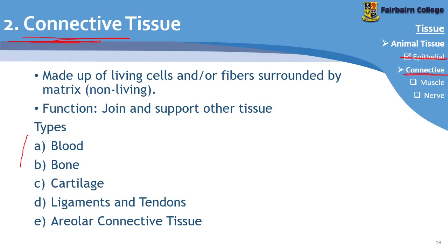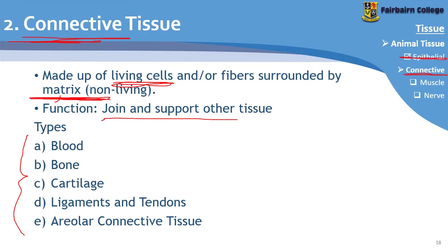There are many different types of connective tissue with many different functions. The two key characteristics are that they are all made of living cells surrounded by some sort of non-living matrix, and they generally provide support and connection — joining and supporting other tissue. The types we'll look at are blood, bone, cartilage, ligaments and tendons, and areolar connective tissue.